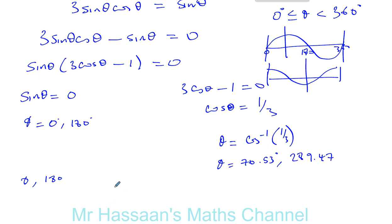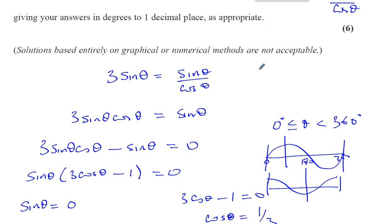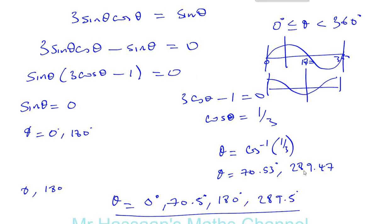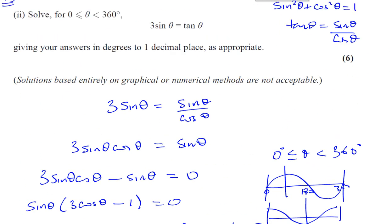So our final solutions are 0 degrees. Then you've got 70.5 degrees to 1 decimal place, which is what they are. So let's just make sure. 1 decimal place, as appropriate. And then you've got your 180 degrees. Of course, you don't have to write that to 1 decimal place because it's an exact answer. And you have 289.5 to 1 decimal place. And here we have all our solutions to this problem. So I hope that was clear. Thank you for watching.